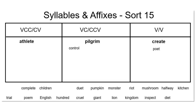Let's see if we can find a word that fits under vowel, consonant, consonant, break, consonant, vowel. When I look at the word pumpkin, I notice that it breaks right between the P and the K — pump-kin. When we look at what's on either side of the syllable juncture, I notice that it's a vowel, consonant, consonant, syllable juncture, consonant, vowel. This would put it right underneath athlete.